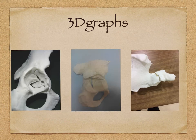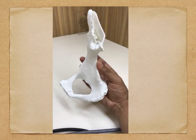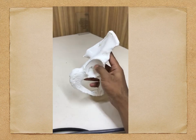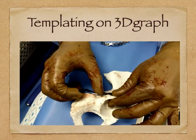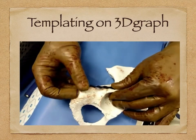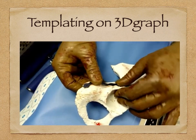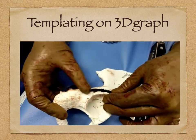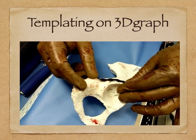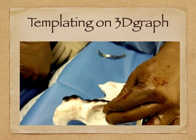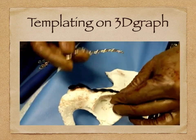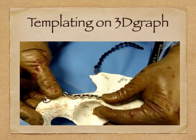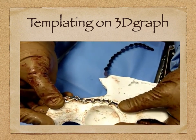These are 3D printed models of different types of fractures. You can hold them in your hand, rotate them, see where the fracture line is, what the thickness of the walls is, and actually template on them. In this case, both sides were printed - the normal side as well as the fractured opposite side - because you want to recreate the normal anatomy. You can see how the plate has been contoured to fit the normal side.